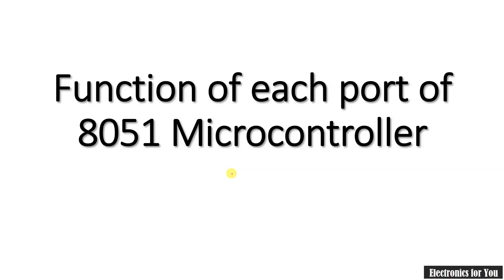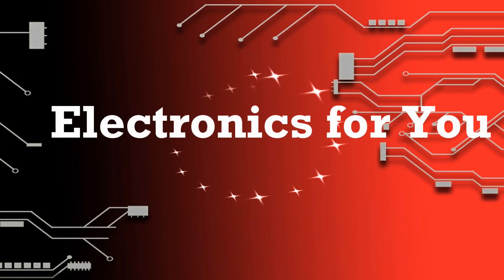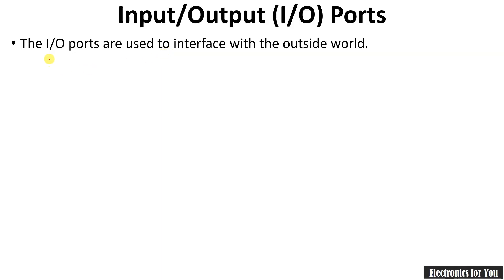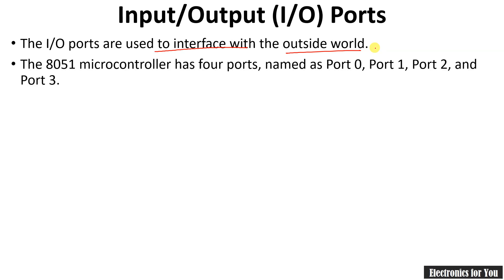Hello friends, welcome to Electronics For You. In this video I will explain the function of each port of the 8051 microcontroller. The IO ports are used to interface with the outside world, so if you want to connect a microcontroller to some sensors, keyboard, LED, LCD screens, etc. The 8051 microcontroller has four ports and they are named as Port 0, Port 1, Port 2, and Port 3.